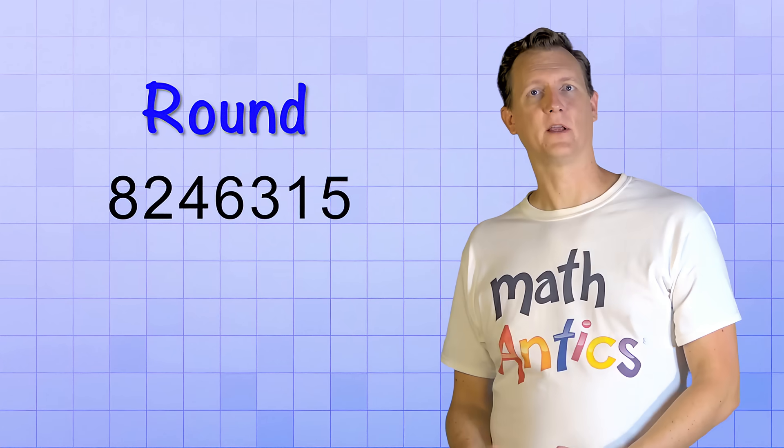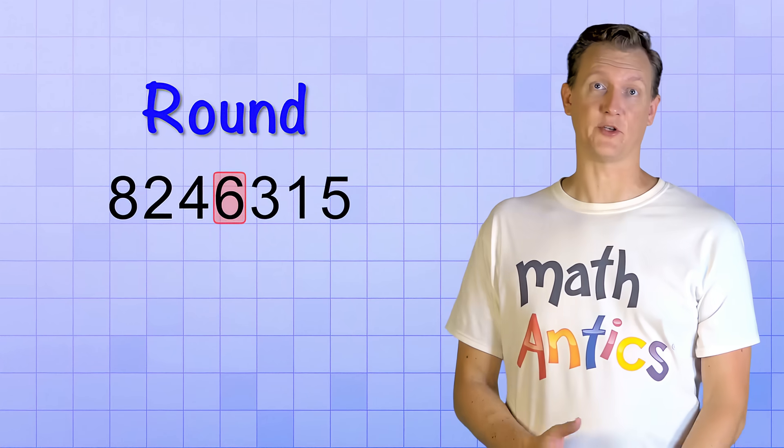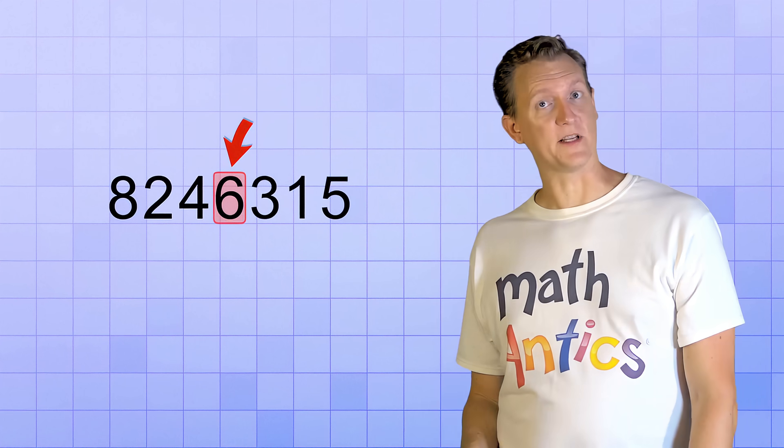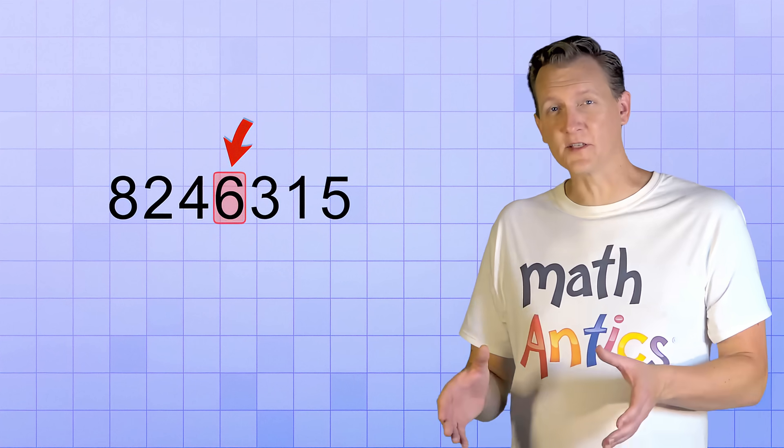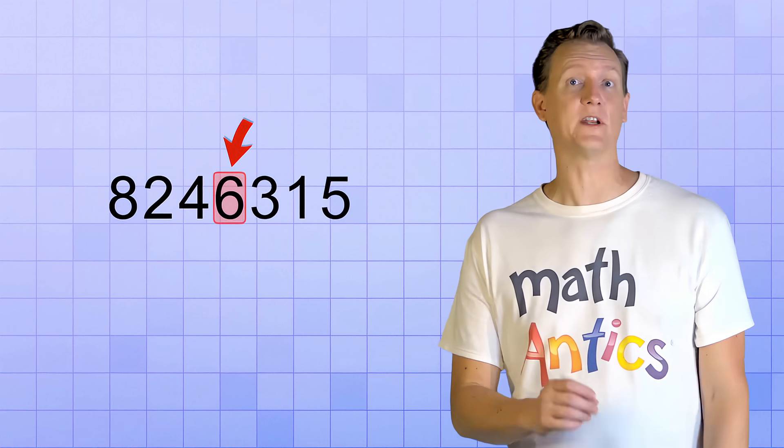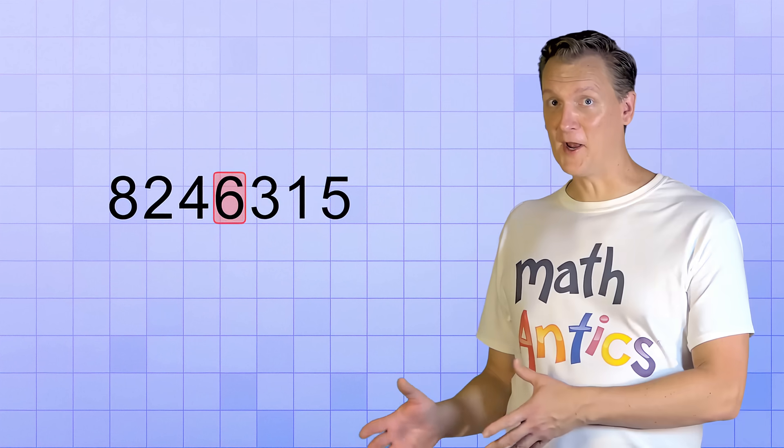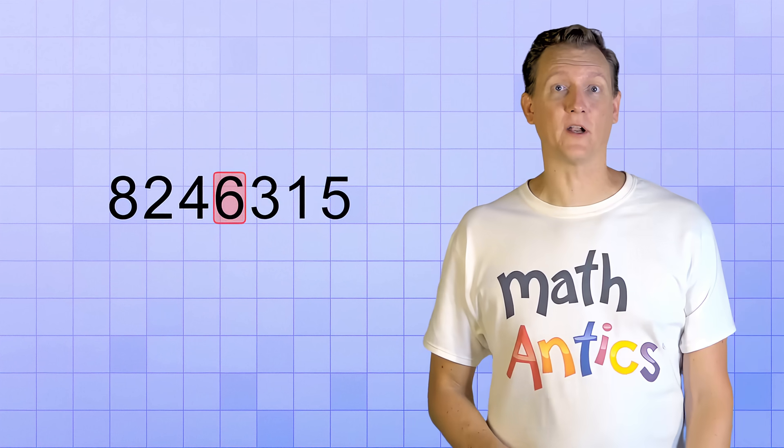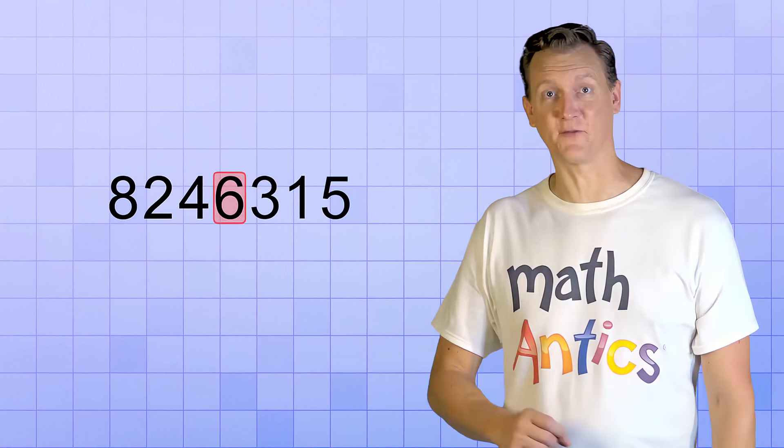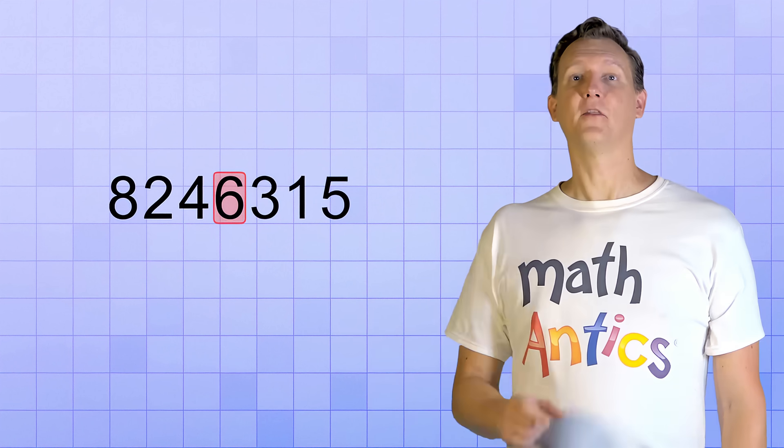So when you're asked to round a number, the first step is to pay very close attention to which number place you need to round to. That number place is important because it represents the smallest unit of counting that you're going to keep in your rounded version of the number. In fact, that number place and the digit inside it is so important that I'm going to give it a special name just for this video. Let's call it the target.